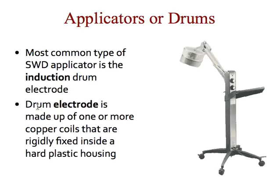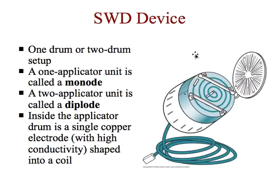The shortwave diathermy device has an applicator or drum, and the most common type is called an induction drum electrode. One or more copper coils are in the housing, rigidly fixed. If there's just one drum being used, it's called a monode. If two drums are used for the treatment, it's called a diplode.